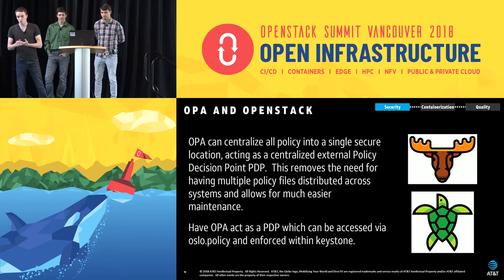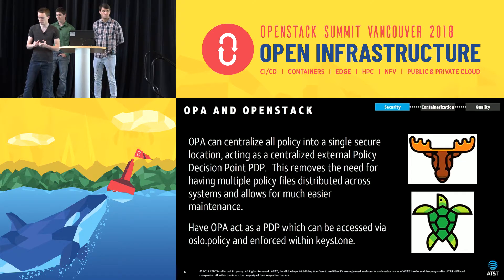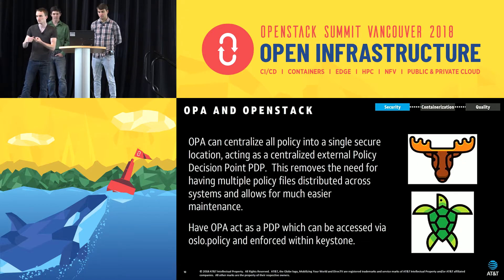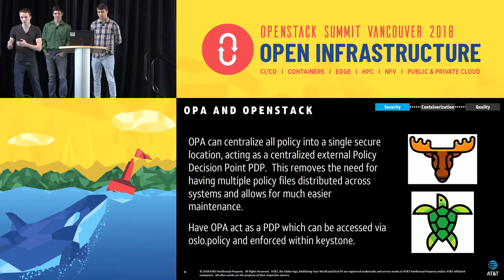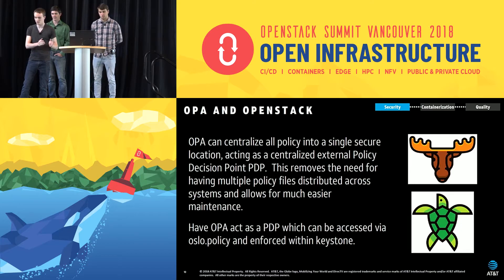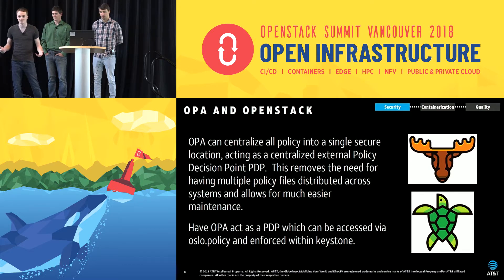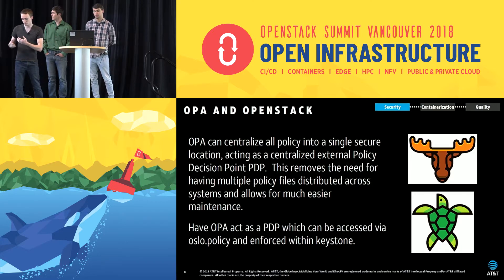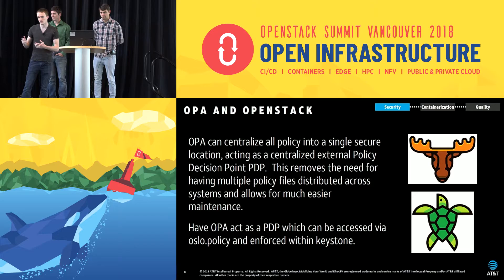The main use case for OPA with OpenStack is to have it act as a policy decision point, or PDP — just an external location where all policy is done. This would take the policy work out of all the different services, so all the policy in Nova, Keystone, Neutron, Glance, and Cinder would be pulled out and done through OPA. That's nice because you no longer have to have separate policy files for each service. It's all centralized and much easier to manage. If you're a large organization with many policies, it's just one place you can edit it all. We would use Oslo policy to enforce that through Keystone, but OPA would be the centralized location for it all.